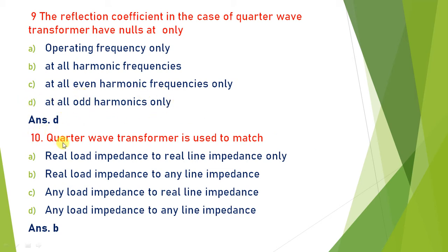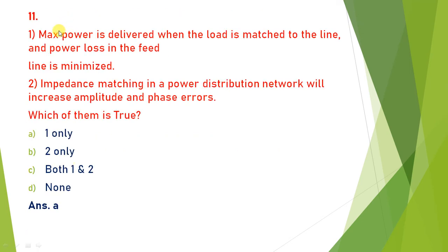Next: a quarter wave transformer is used to match which type of impedance? Generally, the quarter wave transformer is used to match a load impedance that must be in real form — not complex or imaginary. The line impedance can be real, imaginary, or complex. So the quarter wave transformer matches real load impedance to any line impedance — answer is (b).